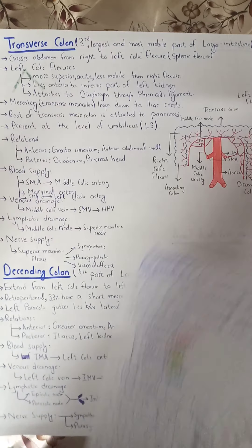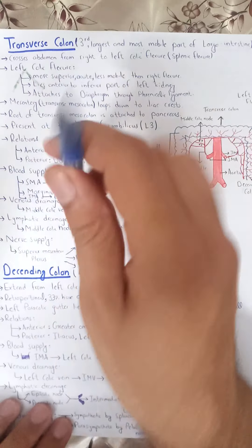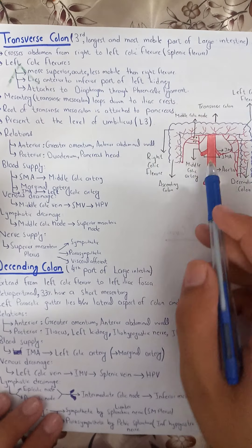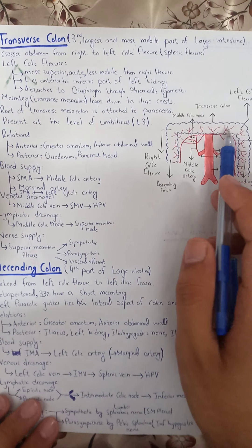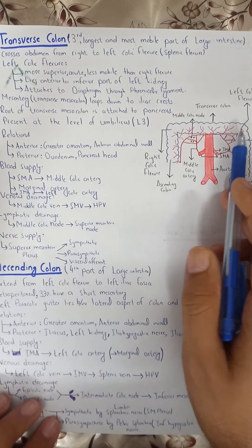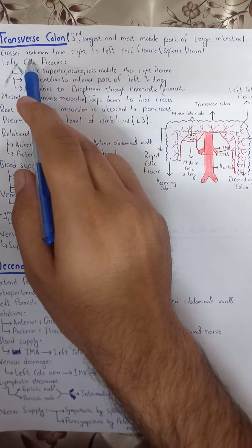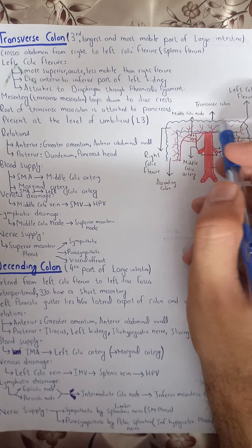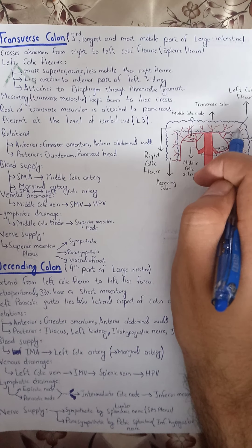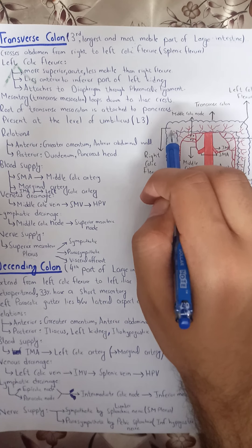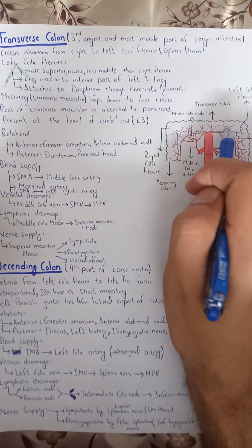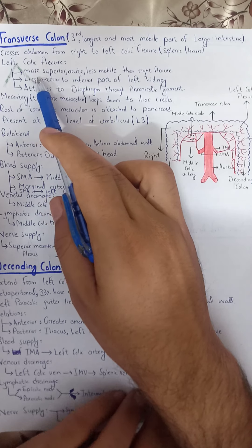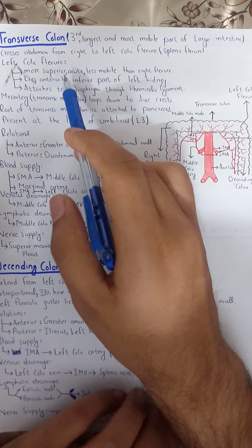The transverse colon is the third part and the longest and most mobile part of the large intestine. It crosses the abdomen from the right colic flexure to the left colic flexure. The left colic flexure — also called the splenic flexure — is more superior, more acute, and less mobile than the right. It lies anterior to the inferior part of the left kidney.